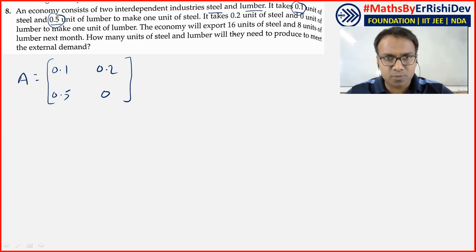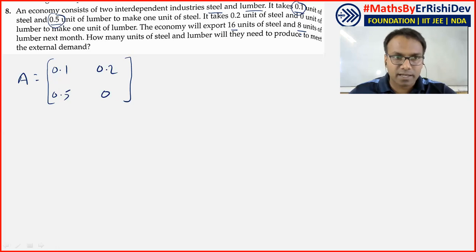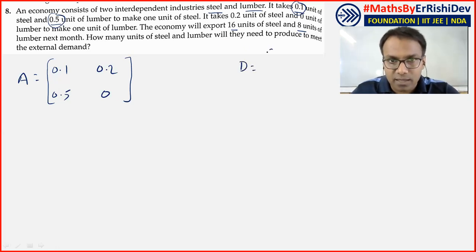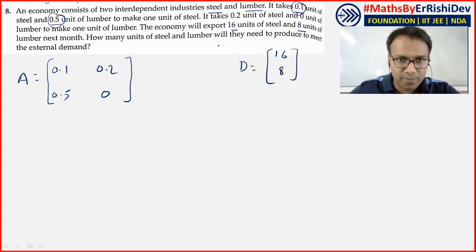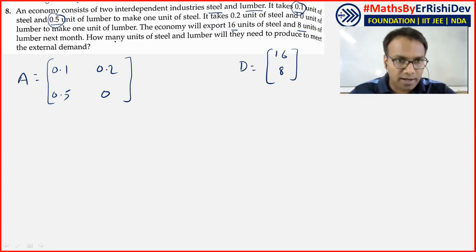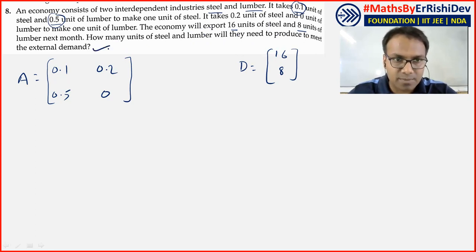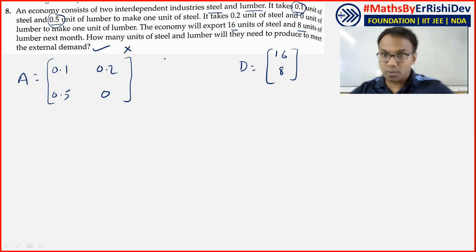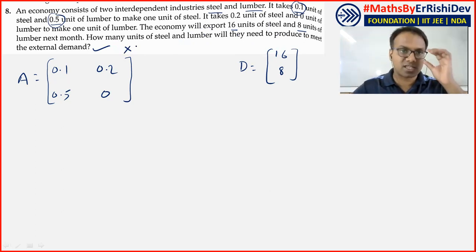The economy will export 16 units of steel and 8 units of lumber next month — so the demand D is 16 and 8, with steel on top and lumber below. The question asks: how many units of steel and lumber need to be produced to meet the external demand — i.e., find the gross output X.